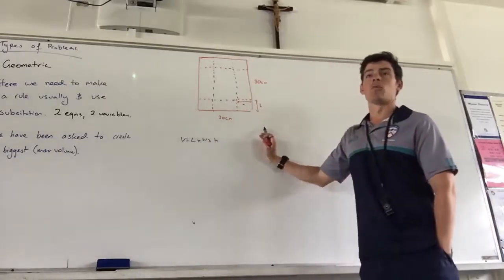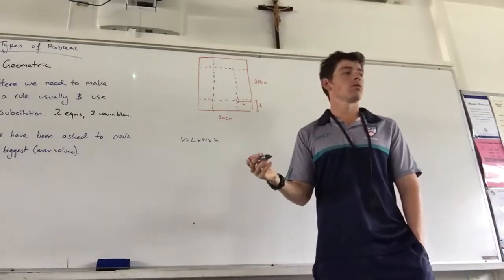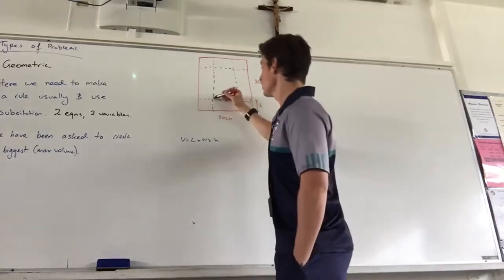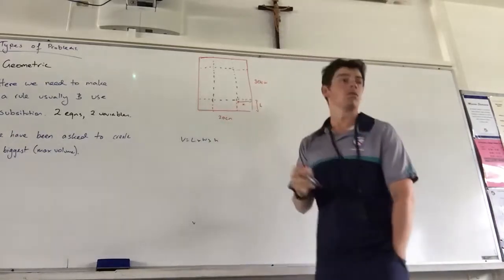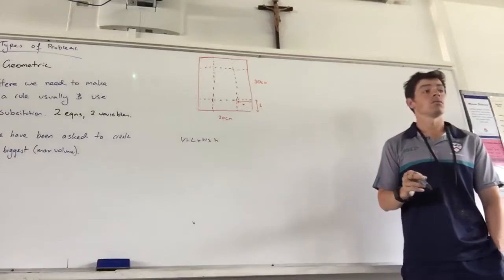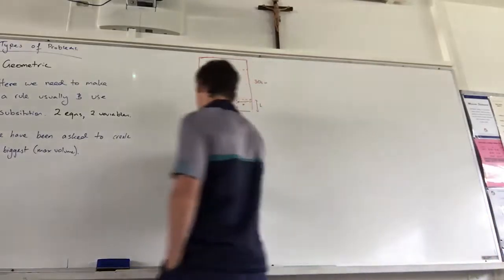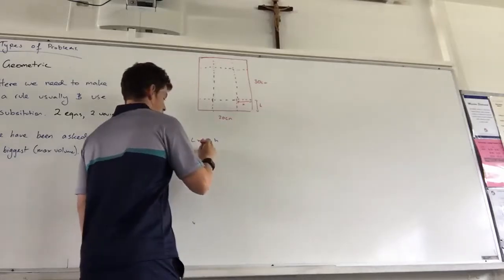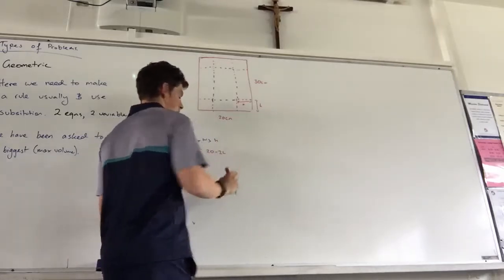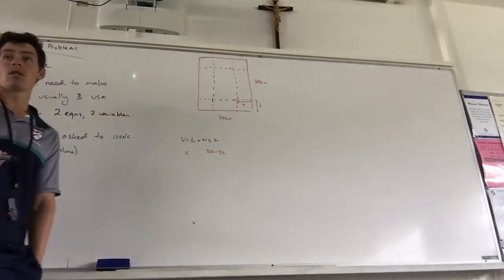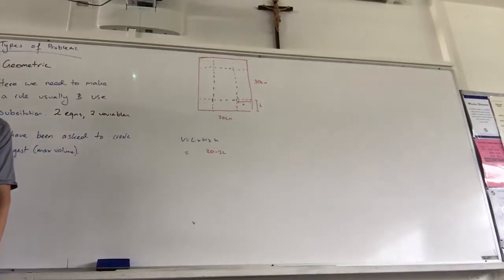What's the full width? So, can I get my width in terms of height? What's this length here in blue? Width minus one height. Width minus one height? Two height. So, wouldn't my width now be twenty minus two h? Yeah. Is that my width? Yeah. Yes.